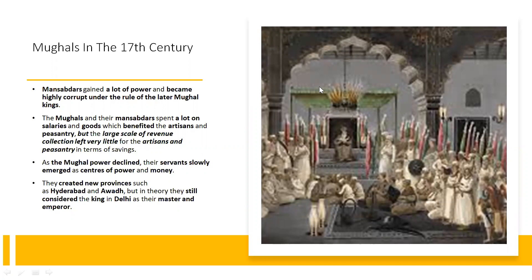Moving to the Mughals in the 17th century — Mansabdars gained a lot of power and became highly corrupt under later Mughal kings. The Mughals and their Mansabdars spent a lot on salaries and goods, which benefited artisans and peasantry, but the large-scale revenue collection left very little for them in terms of savings. As Mughal power declined, their servants slowly emerged as centers of power and money, creating new provinces such as Hyderabad and Awadh.